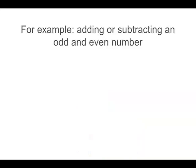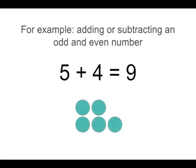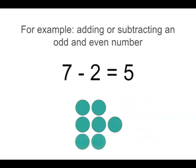Now let's look at when we add or subtract with an odd and even number. Let's look at 5 plus 4 equals 9 as our example. You can see when we add an even number to an odd number, the odd property remains, so our answer will always be odd. Now if we subtract with an odd and even number, for example 7 take away 2 equals 5, you can see that when we subtract the even number, the odd property remains. So when we add or subtract with an odd and even number, our answer will always be odd.